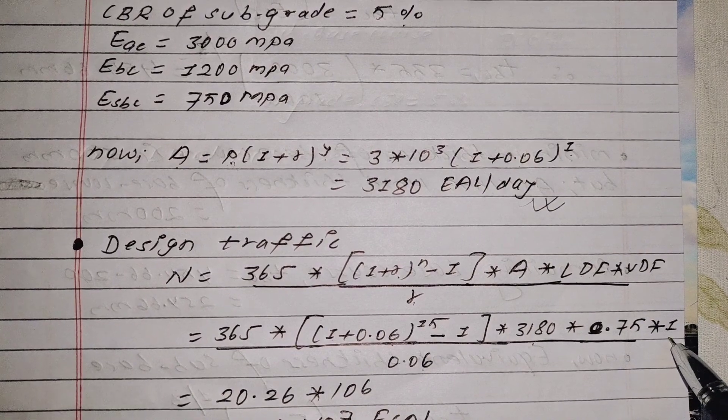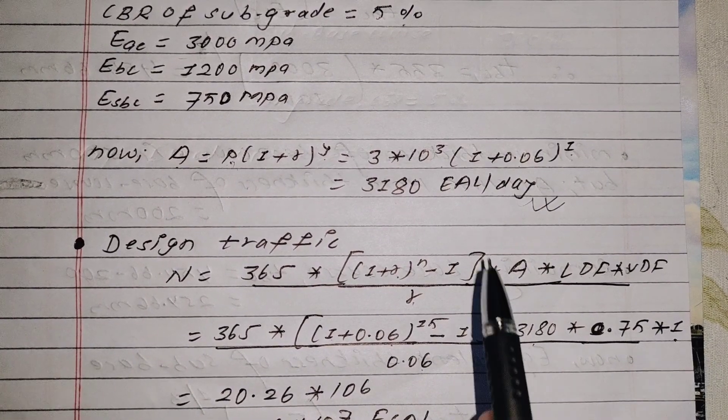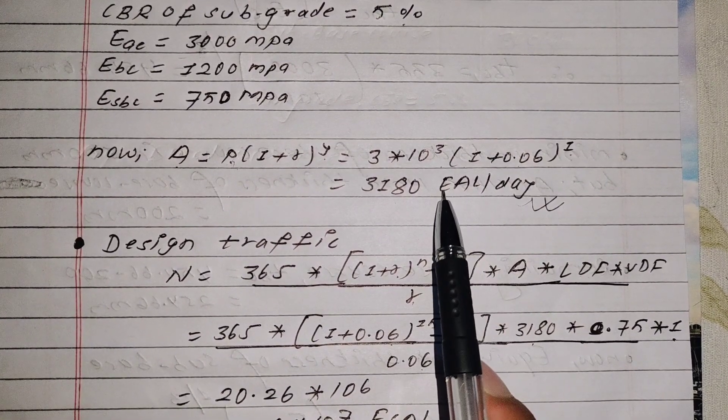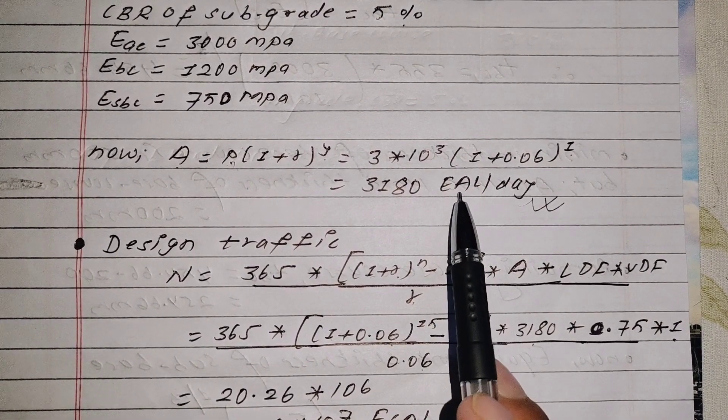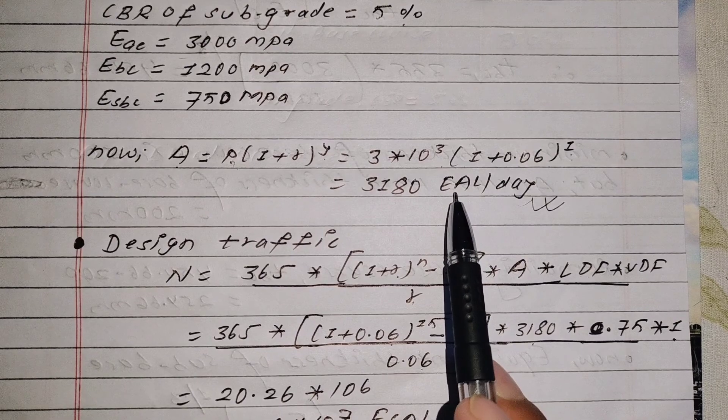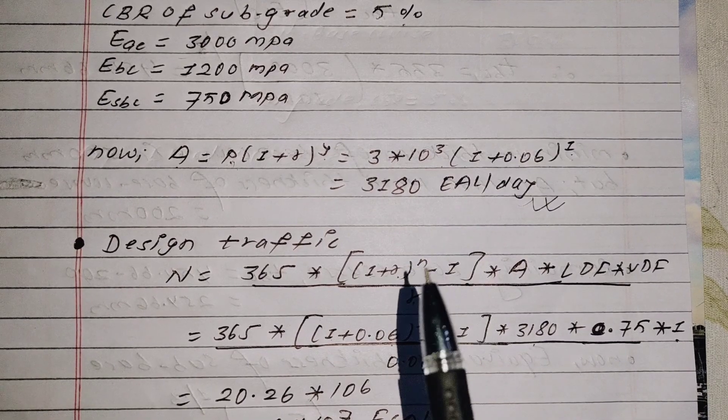For a two-lane single carriageway road, we take the lane distribution factor as 0.75. For the vehicle damage factor, we take 1 as per the standard Asphalt Institute method of flexible pavement design.